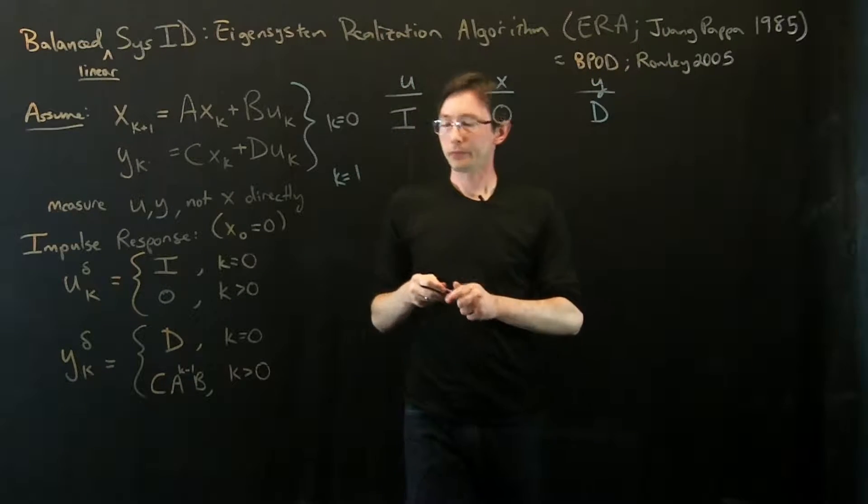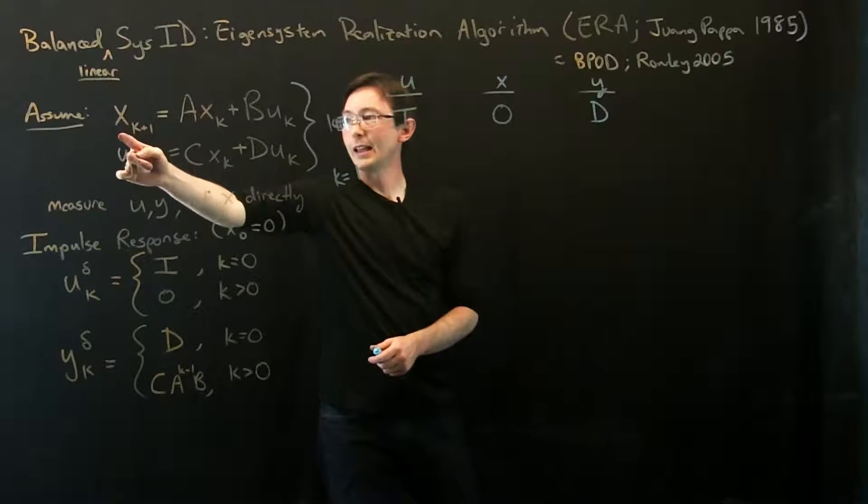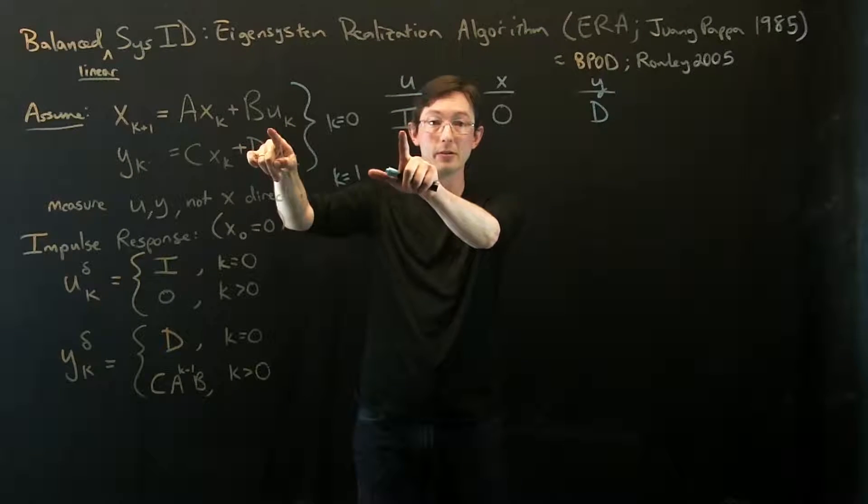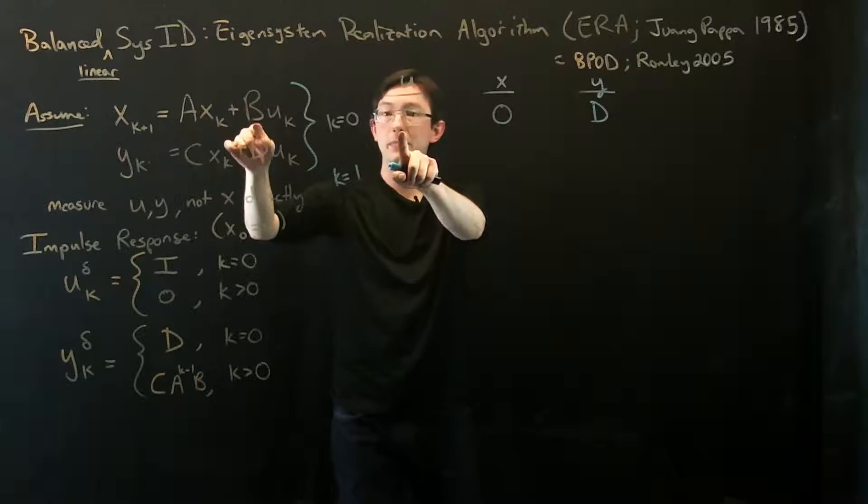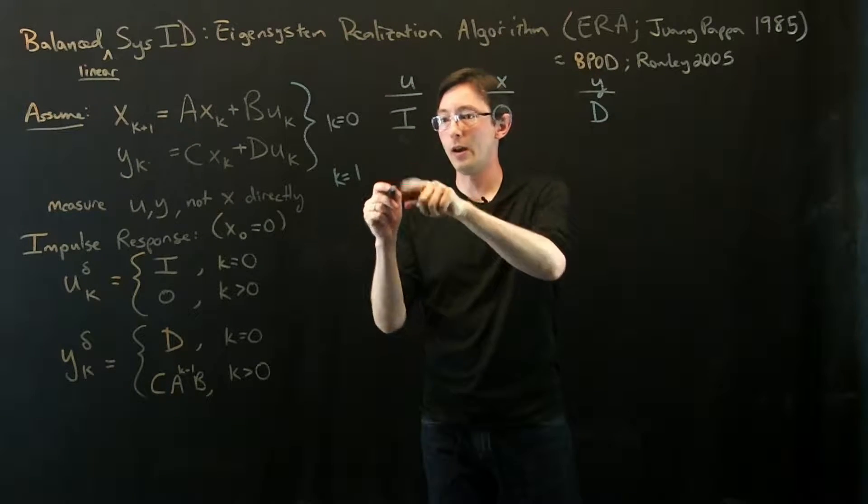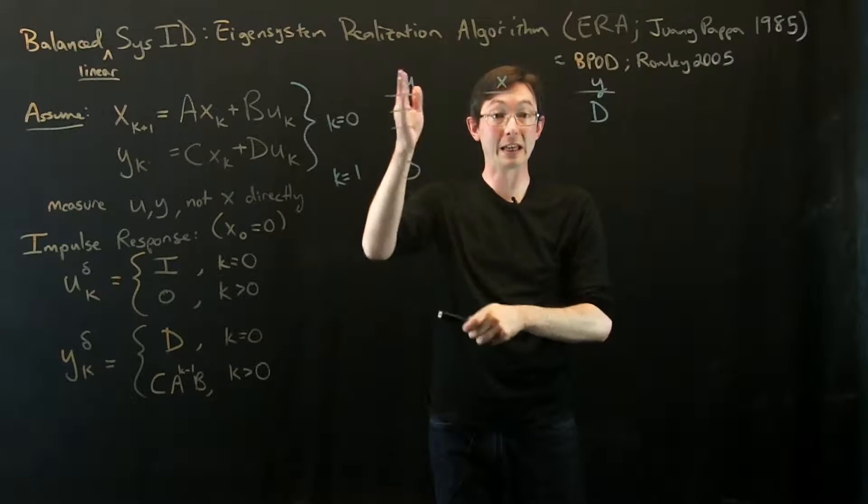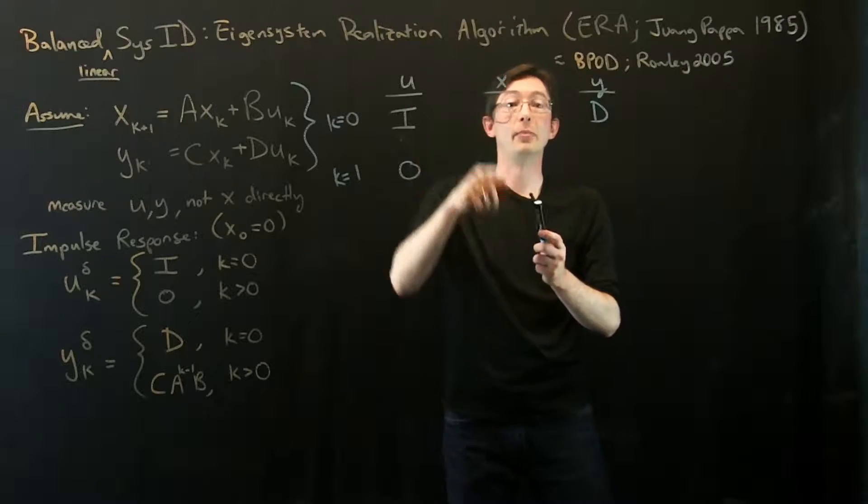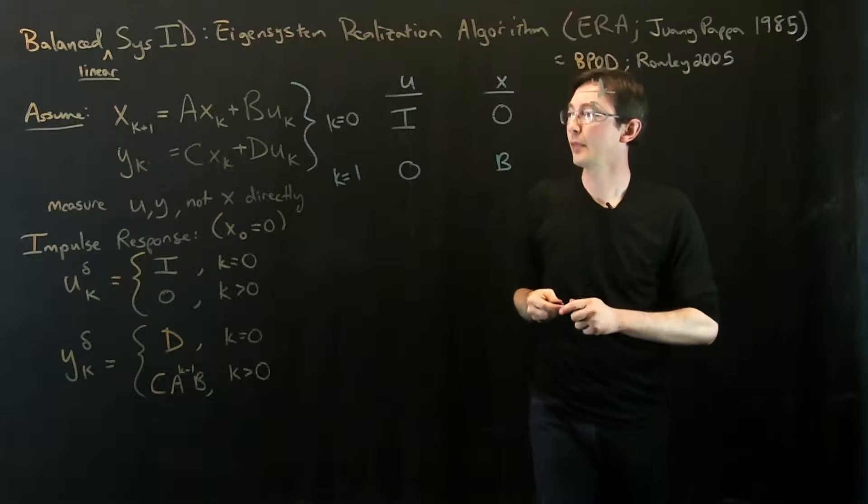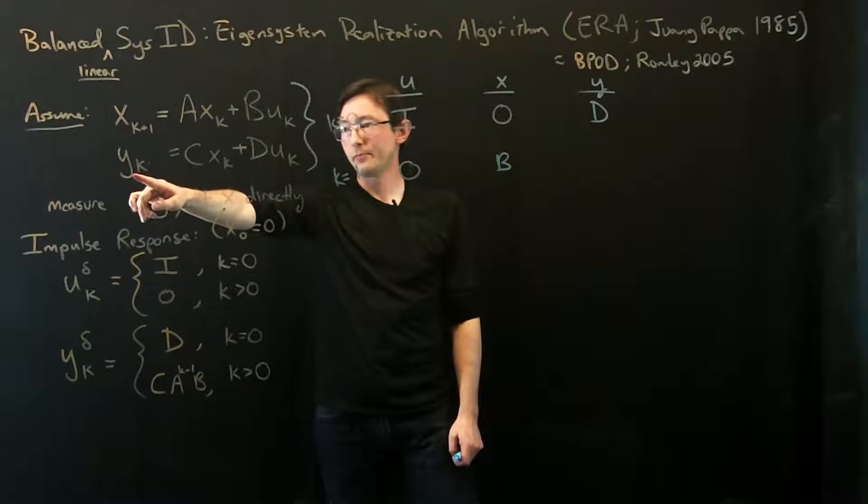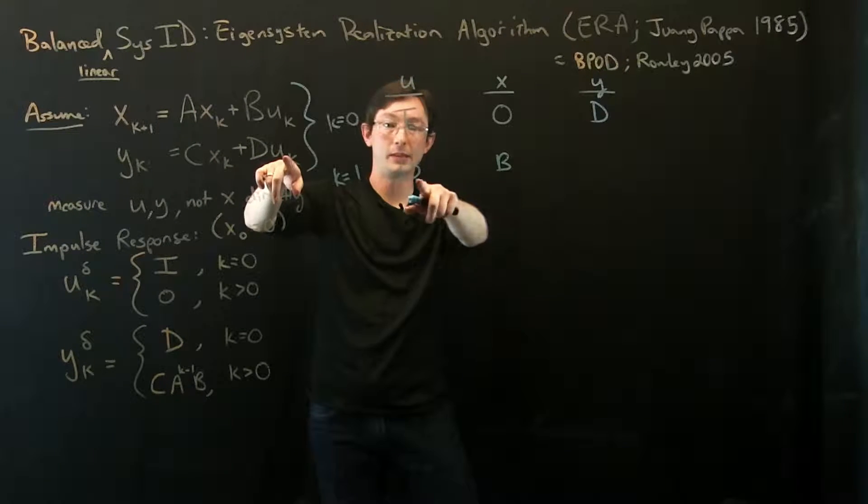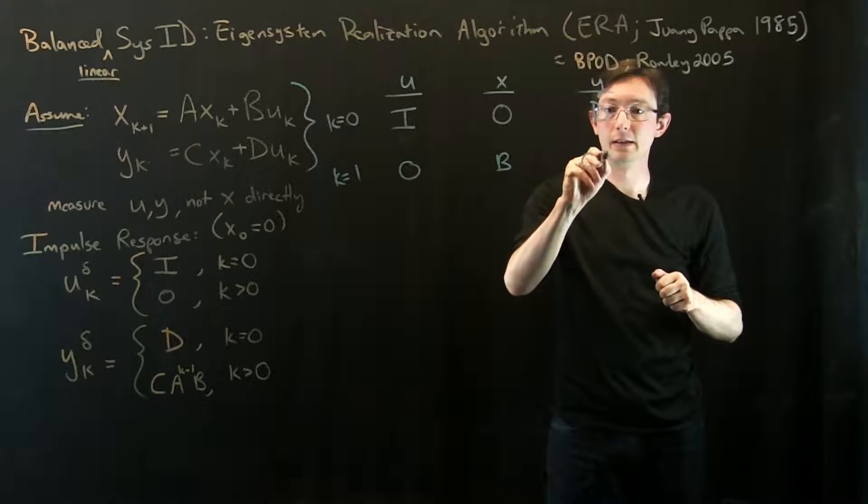Now, at k equals 1, x at time 1 is B times u at time 0. u at time 0 was I, so x1 is B plus my 0 initial condition. At time 1, my impulse response turns off. I'm no longer kicking the system. I kicked it, and now it's 0. But x goes from 0 to B. Now x is B at time 1. And what is y? Well, y is C times x right now plus D times 0. So y is CB.